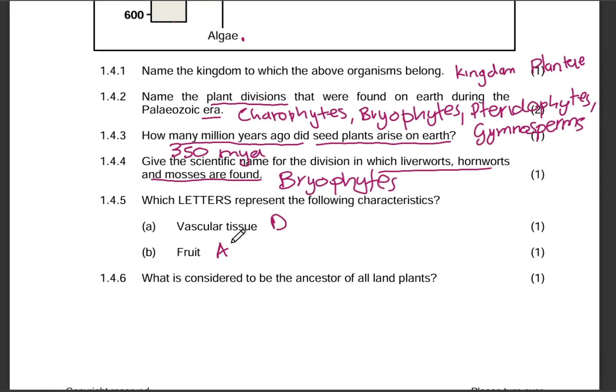What is considered to be the ancestor of all land plants? That is algae. So we are done with the two phylogenetic tree or phylogenetic diagram questions. All the best for your test and exam.